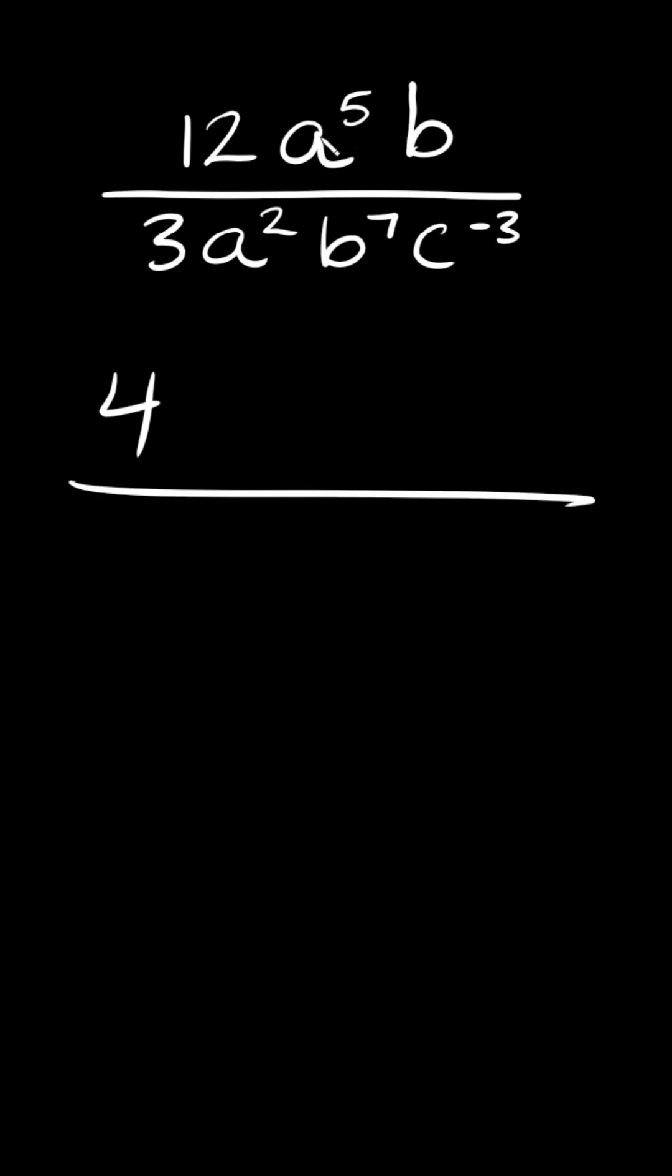Next in order to divide the variables you just want to subtract the exponents and you always start with the one on top. So here a to the fifth over a squared is the same thing as a to the fifth minus 2. 5 minus 2 is equal to positive 3. So then we have a to the positive 3 right there.